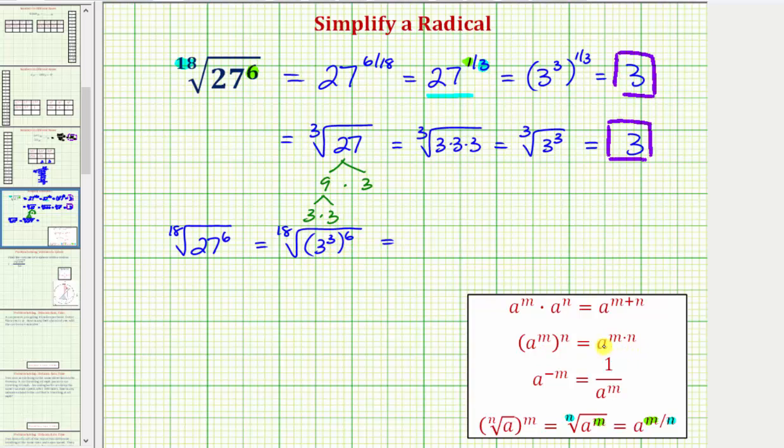Once again we have powers raised to powers, and therefore we can multiply the exponents. So we'd have the 18th root of 3 raised to the power of 3 times 6, which is 18. So we have the 18th root of 3 to the 18th, which again is going to simplify perfectly to one factor of 3.